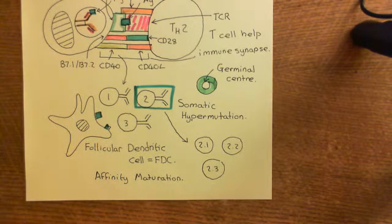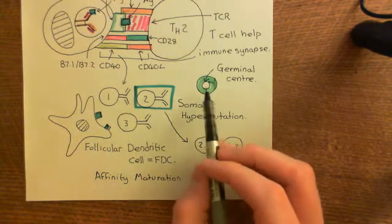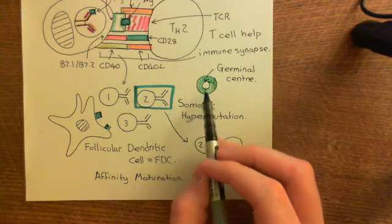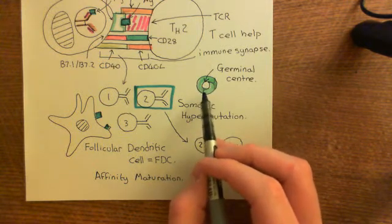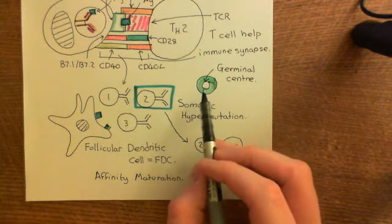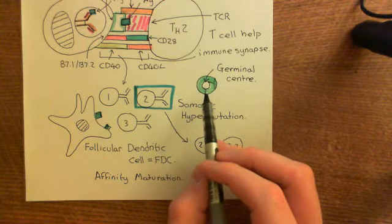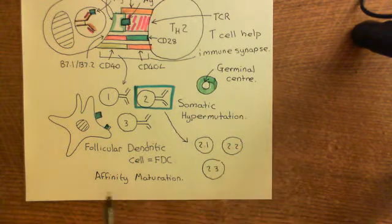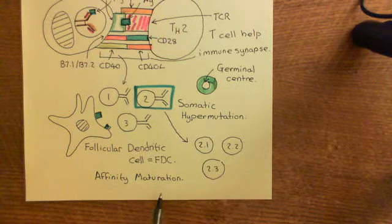Therefore, over time, what will happen is the characteristics of this population will evolve towards having better and better B cell receptors, as far as binding to the antigen is concerned. And that's what's known as affinity maturation.